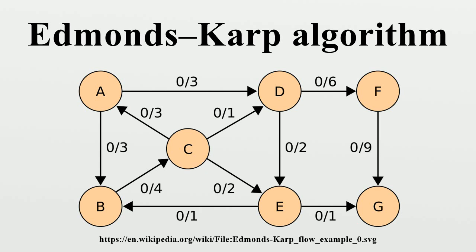Example: Given a network of seven nodes — source A, sink G — and capacities as shown, the pairs written on the edges represent the current flow and the capacity. The residual capacity from a node is the total capacity minus the flow already used. If the net flow is negative, it contributes to the residual capacity. Notice how the length of the augmenting path found by the algorithm never decreases — the paths found are the shortest possible. The flow found is equal to the capacity across the minimum cut in the graph, the goal of separating the source and the sink.